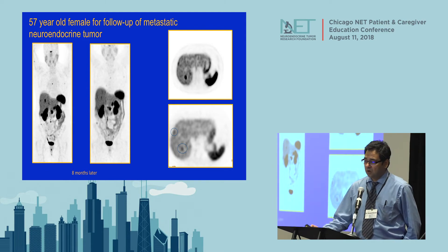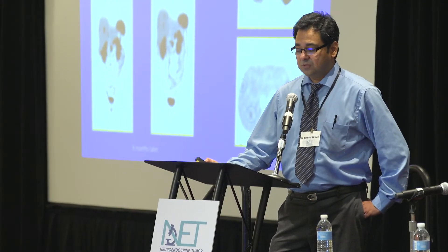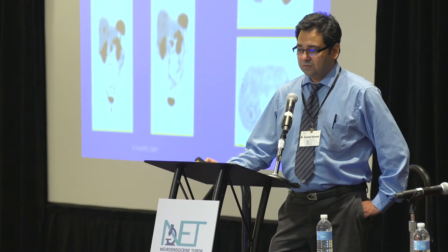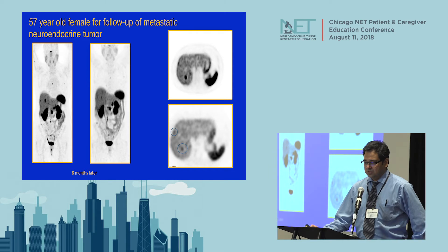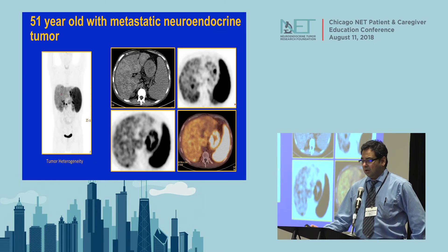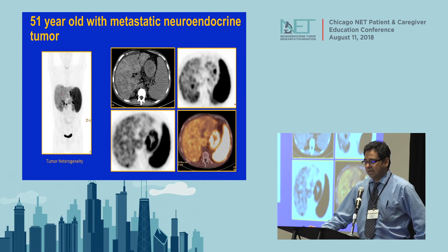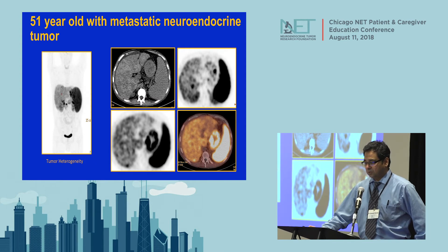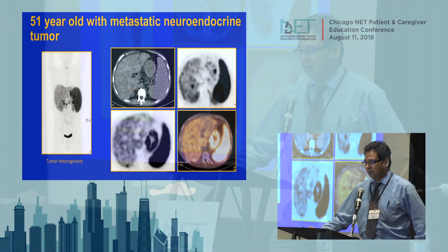We can also follow up patients on therapy using DOTATATE scan. On the left, the patient had many lesions in the liver and upper abdomen. On a subsequent scan done eight months later, hotspots in the liver significantly decreased in intensity, showing tumor response. In another patient with extensive CT-visible hepatic metastases, only a few lesions lit up on DOTATATE, indicating tumor heterogeneity. This patient was initially planned for PRRT therapy but based on scan results was not an optimal PRRT candidate and received chemotherapy instead.